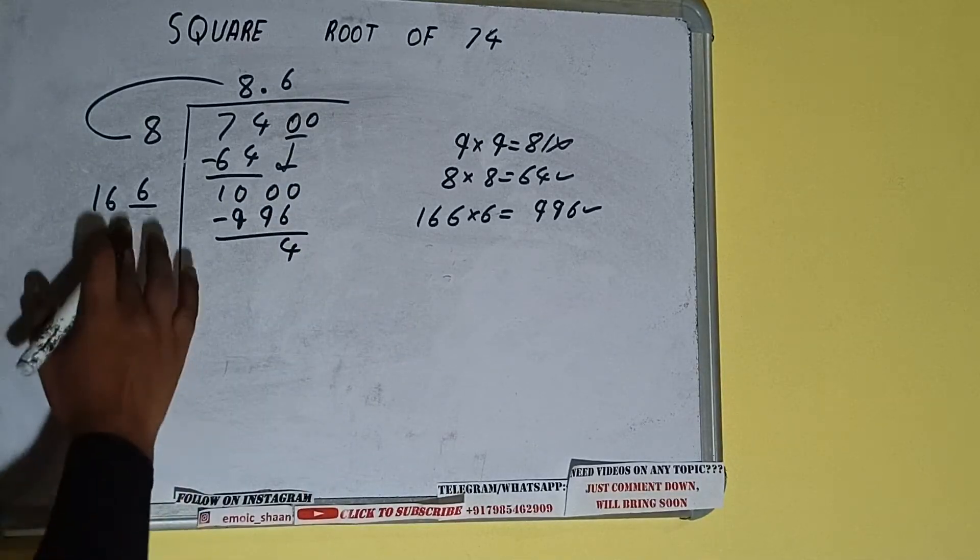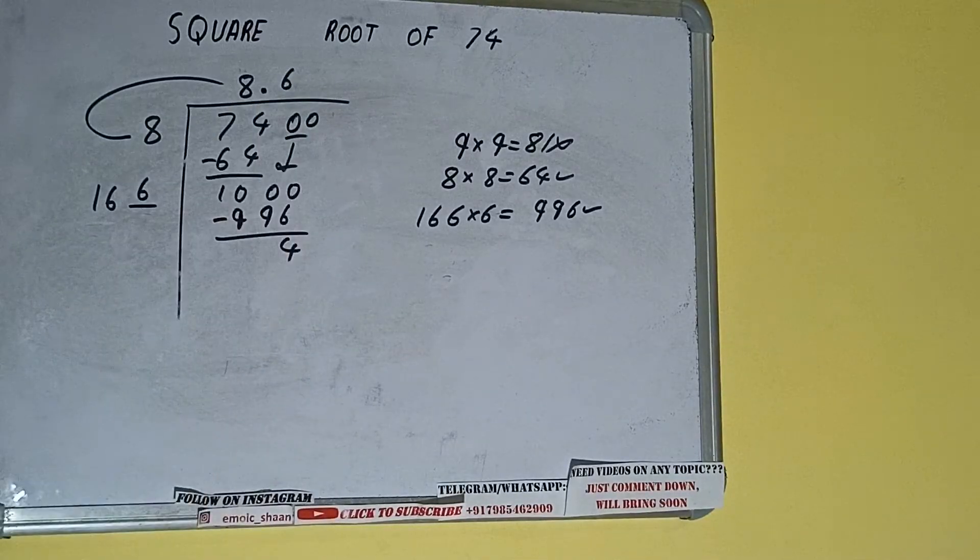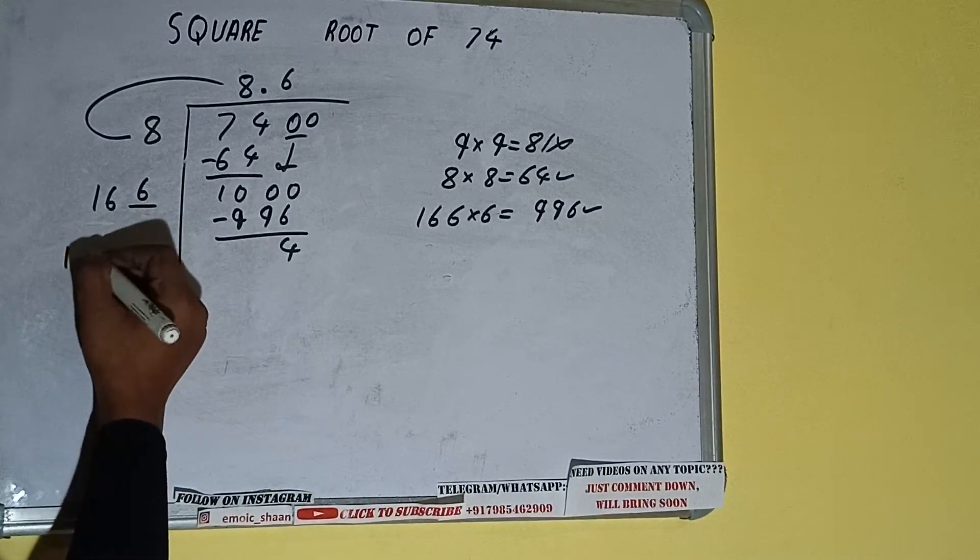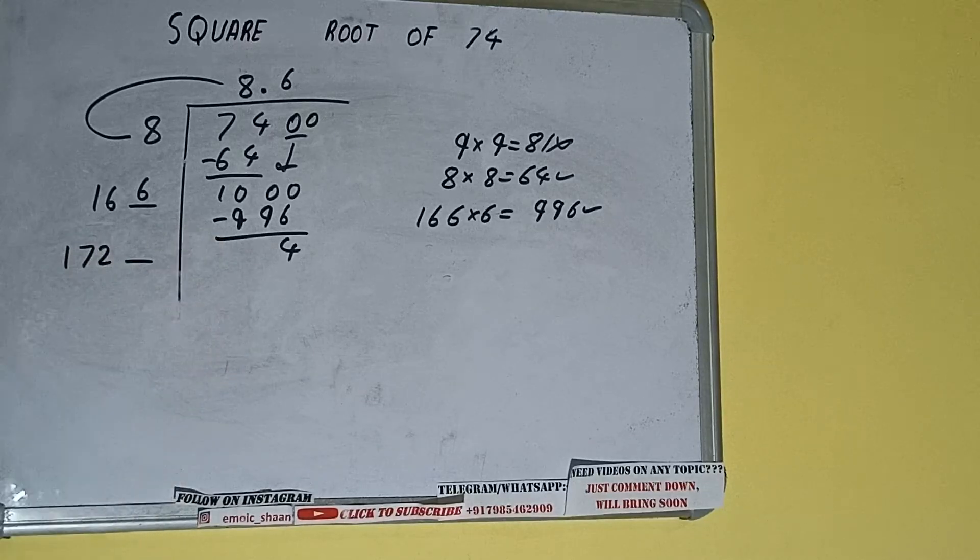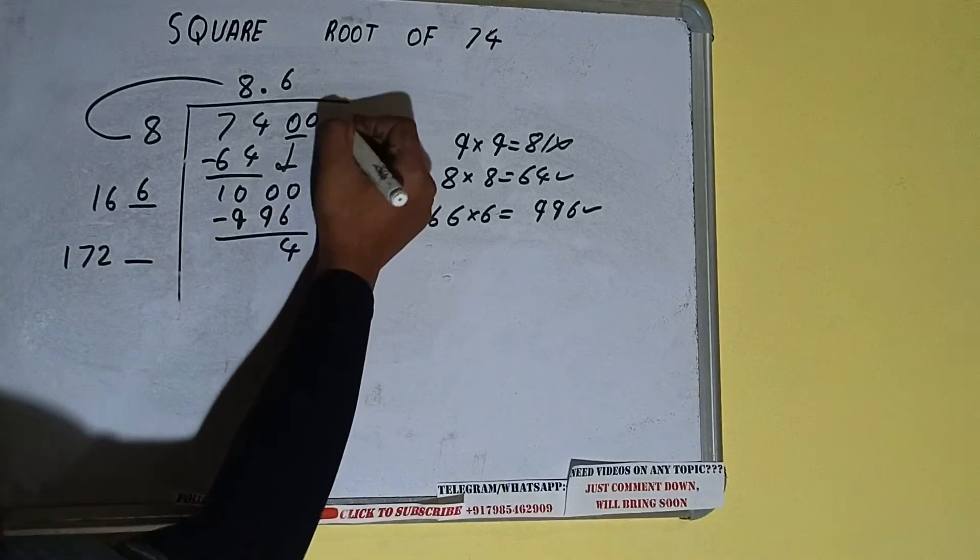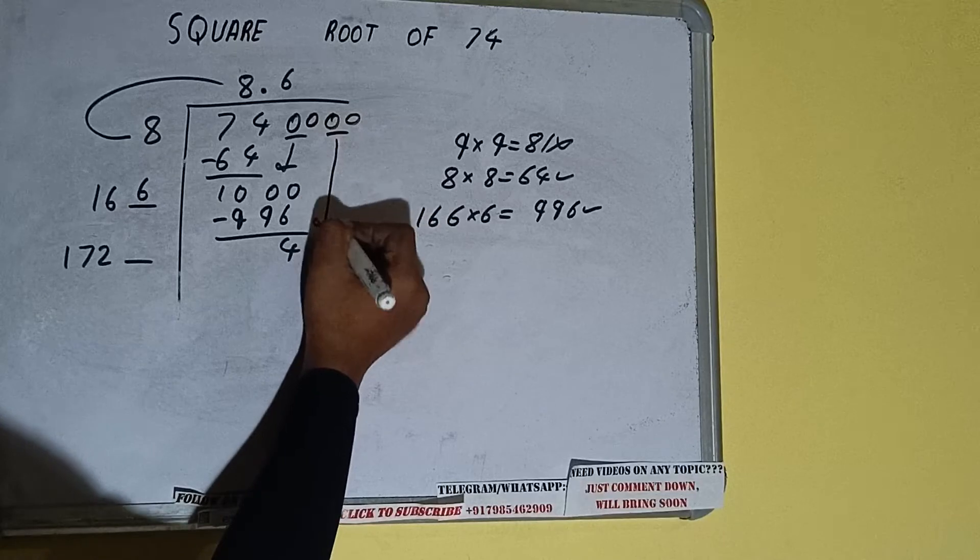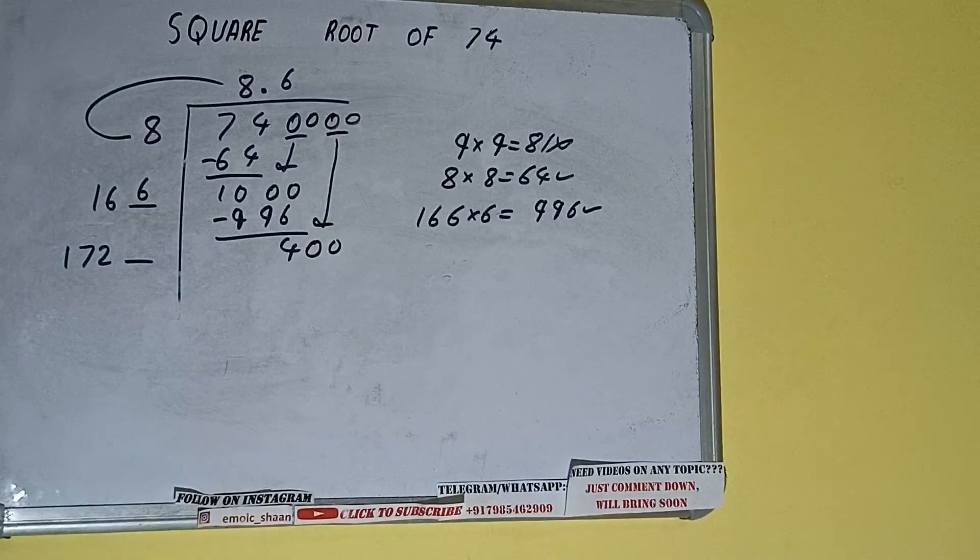Now 16, 6 into 6 we can add both. So 16, 6 plus 6 will be 172 and 1 digit extra. And this number we need to make it big. So bring the next pair of zeros down and it will be 400.